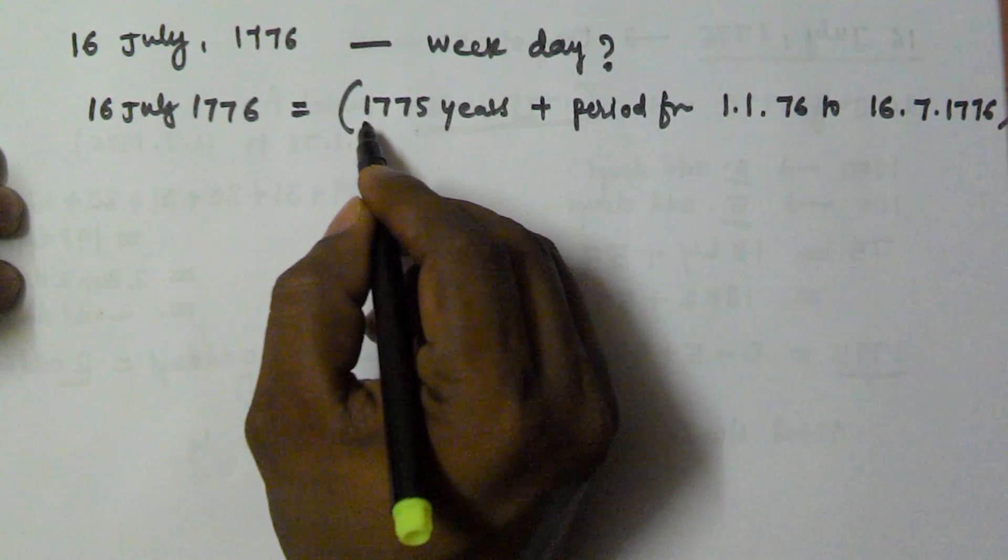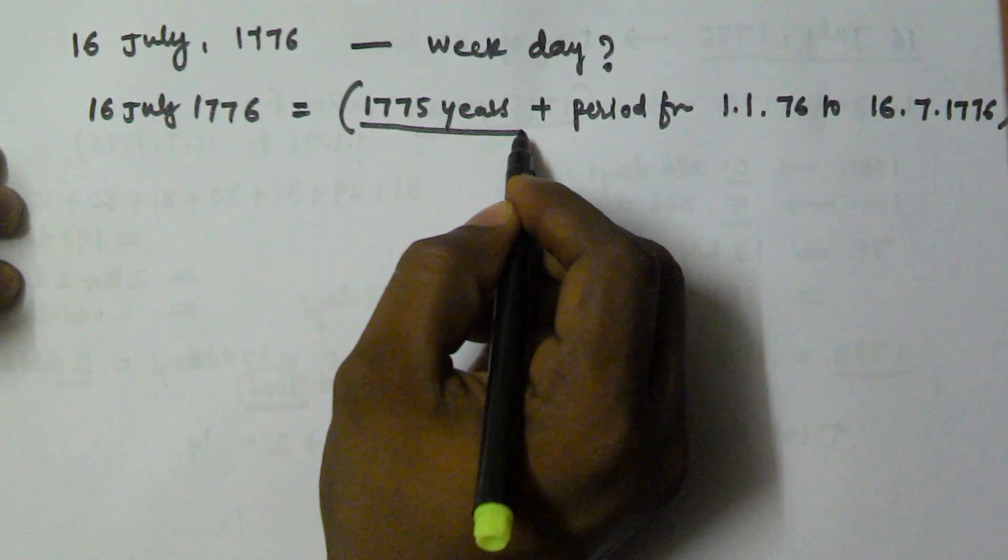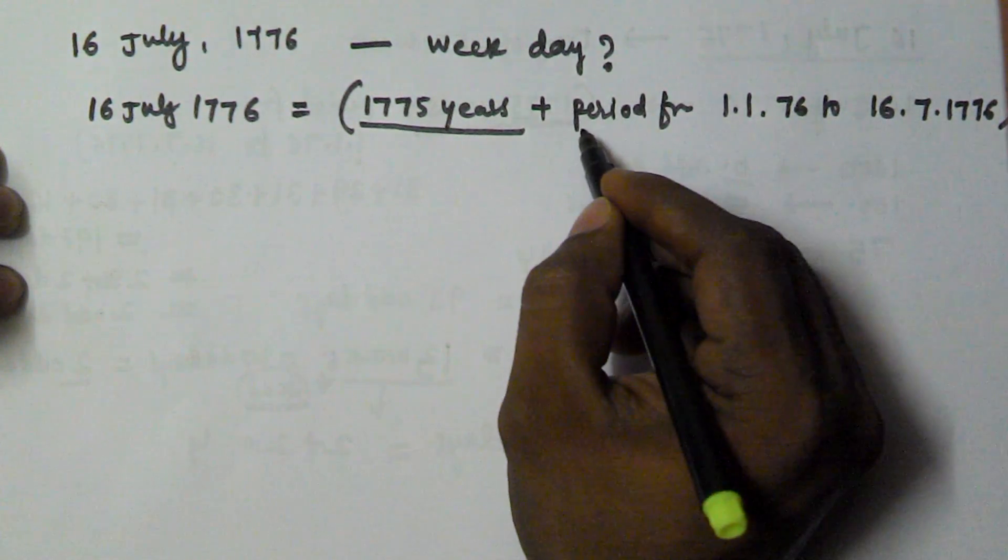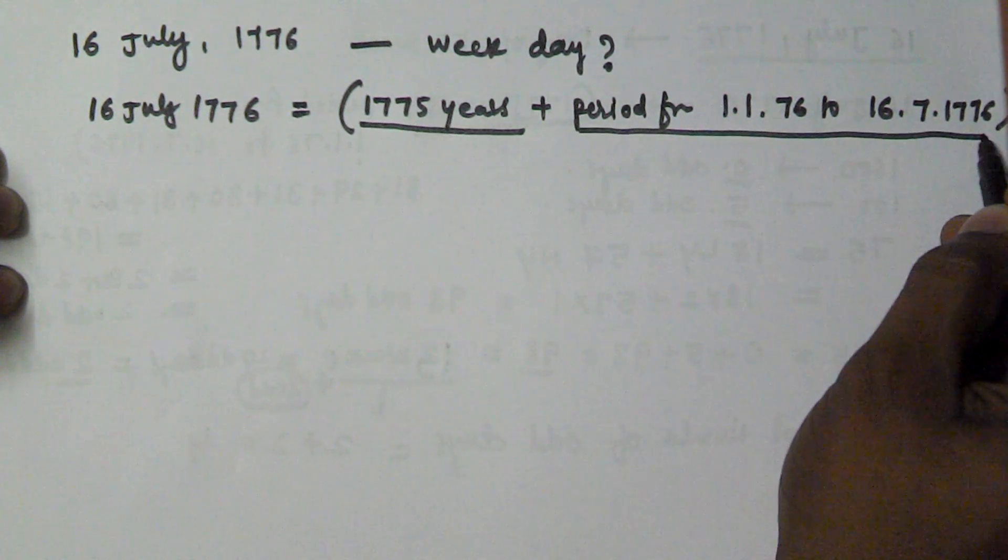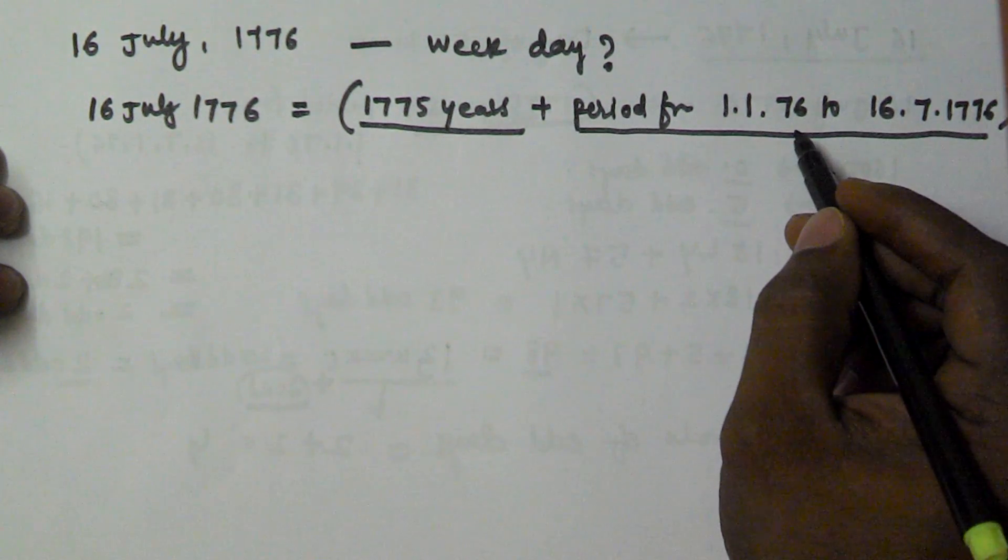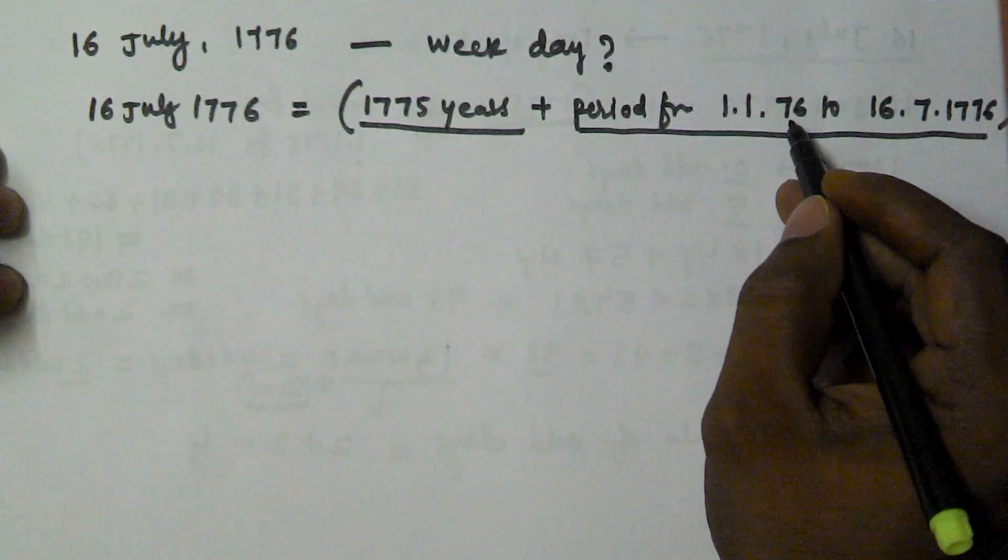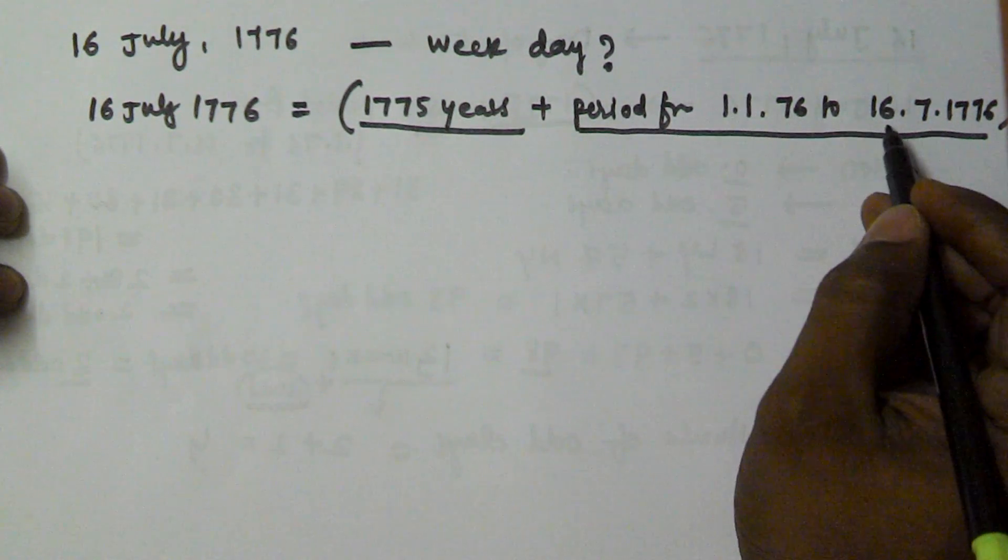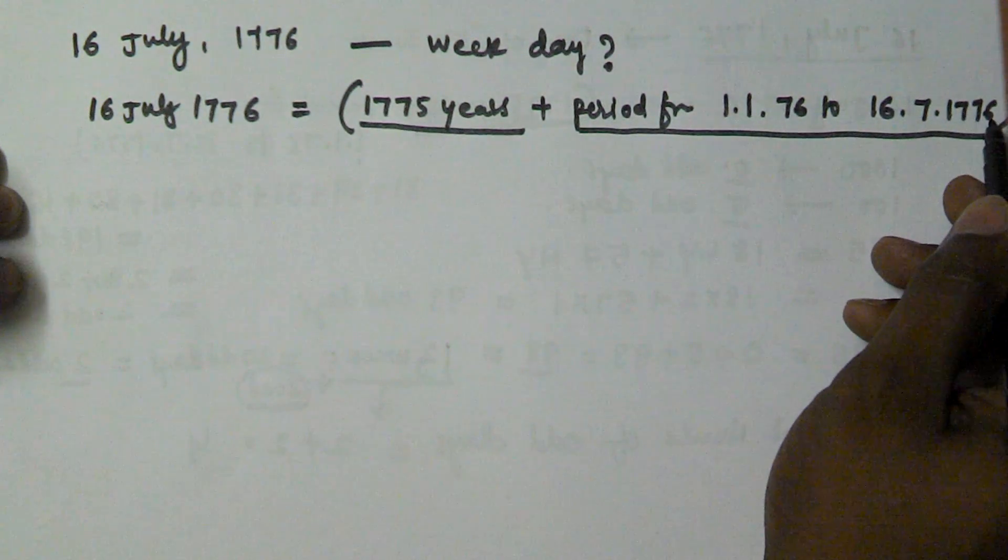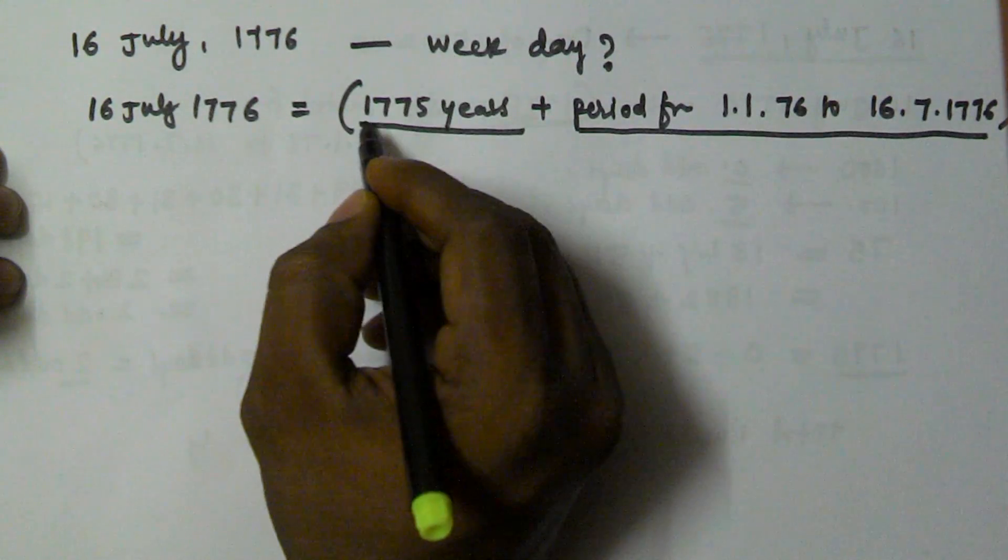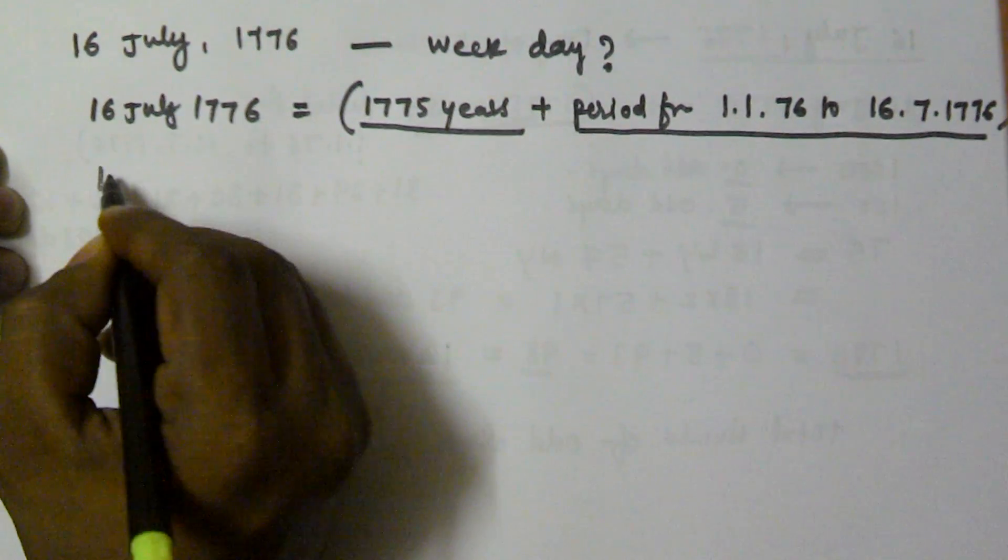First, we find the number of odd days in 1775, and then we will find the odd days from 1st January 1776 to 16th July 1776. Now we find the 1775.